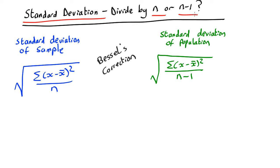A huge amount of time is wasted in stats courses debating which to use. If you divide by n, it's called the standard deviation of the sample. If you divide by n minus 1, it's called the standard deviation of the population.